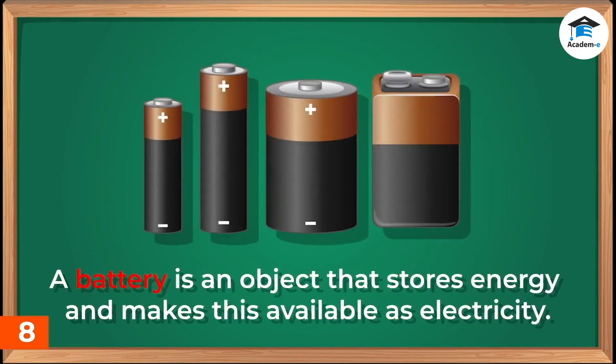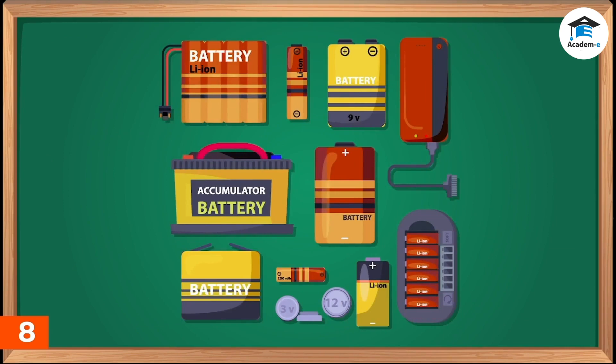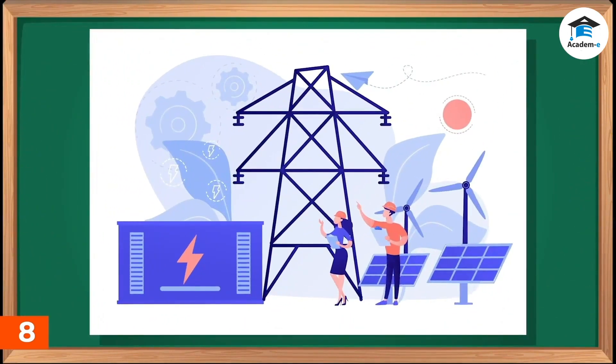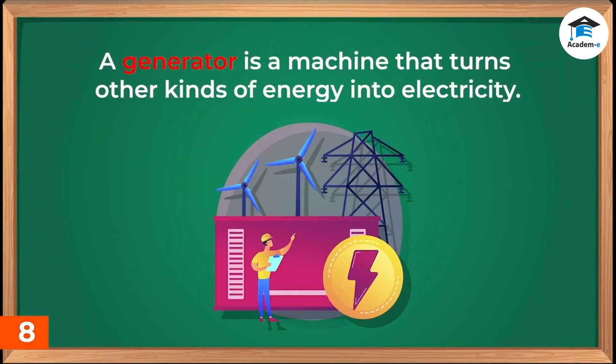A battery is an object that stores energy and makes this available as electricity. Batteries come in different sizes and shapes — they can be small and circular, or big and rectangular in shape, such as the batteries used in cars. A power plant is a building that has big generators. A generator is a machine that turns other kinds of energy into electricity.